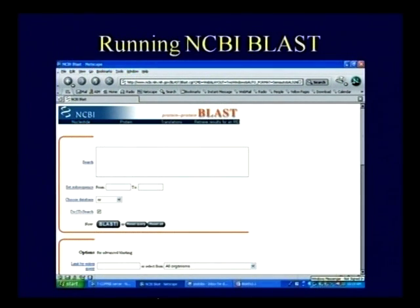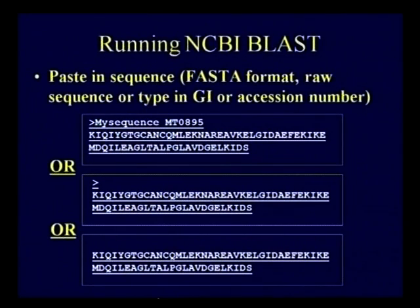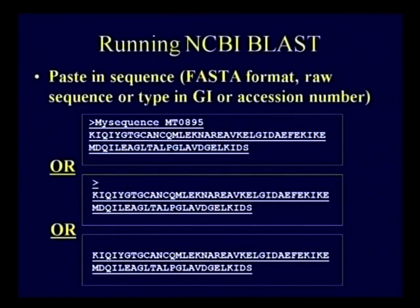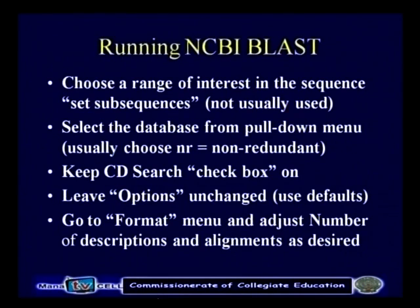Due to the lapse of time, I will just show the running NCBI BLAST. You have to give a query — for example, I have given a query on a human protein and the sequences read like this. You can give a FASTA format, raw sequence, accession number, or GI number. Then choose a range of interest, select the database from the pull-down menu — choose NR for non-redundant — and keep CD search checkbox on.